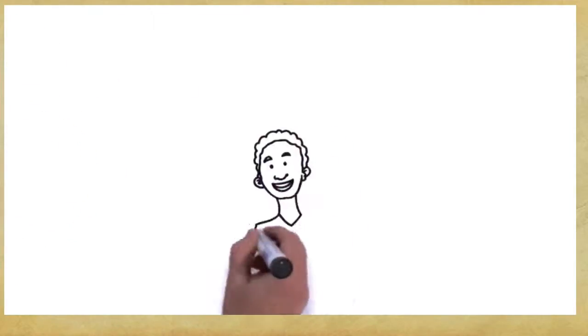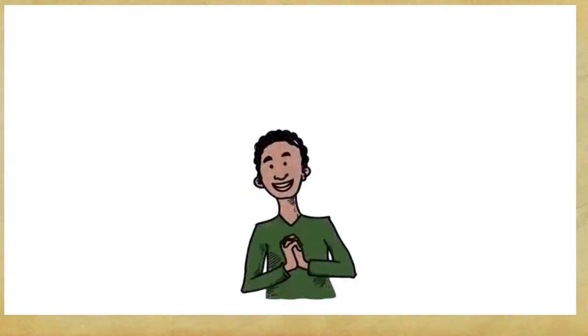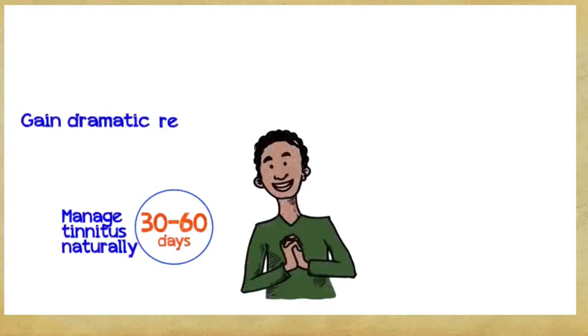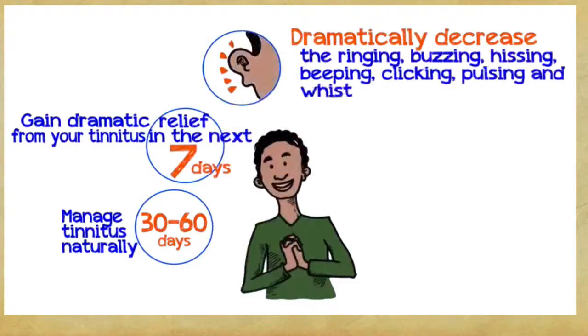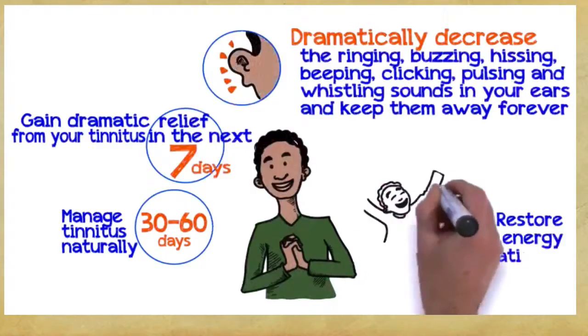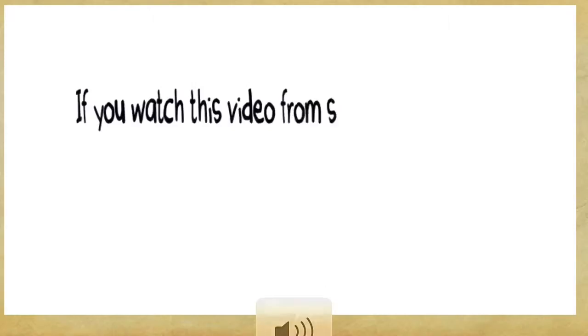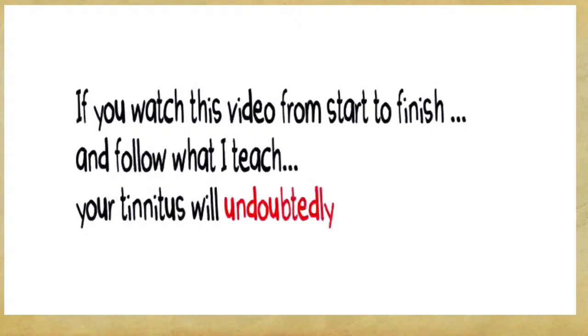So, what can you gain if you embrace these three easy principles? You can manage tinnitus naturally within 30 to 60 days, gain dramatic relief within the next seven days, dramatically decrease the ringing, buzzing, hissing, beeping, clicking, pulsing, and whistling sounds in your ears. Let me reiterate, if you watch this video from start to finish and follow what I teach, your tinnitus will undoubtedly start to fade away.